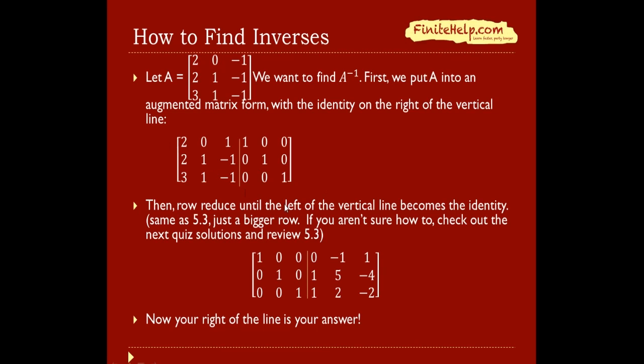Now we're going to row reduce the left side, so that it becomes the identity on the left side. So this is the same thing as you do in 5.3. Getting a leading one for each row, it's just that these are now bigger rows. If you're not sure how to, you can check out the next quiz in the solution, and also review 5.3. Here I'm not going to go through every step of how to row reduce this.